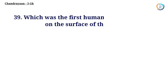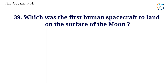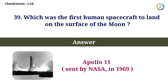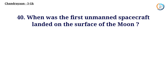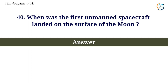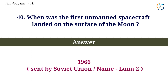Which was the first human spacecraft to land on the surface of the moon? Answer: Apollo 11. When was the first unmanned spacecraft landed on the surface of the moon? Answer: 1966.